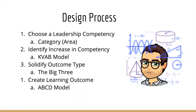The first step in the design process is choosing the leadership competency that you want to highlight or work with. We'll talk about the specific categories of leadership competencies as well as the areas within those categories. Next, you'll identify the increase in competency using the KVAB model. Then you'll solidify the outcome type using the big three, and finally create a learning outcome using the ABCD model.